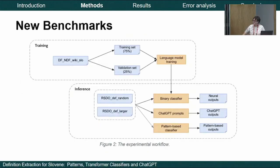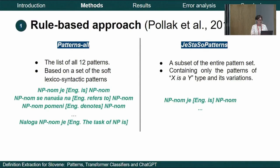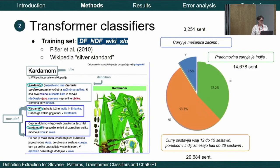We compared two pattern-based approaches developed quite a while ago. They are soft-matching patterns containing typical structures like Hearst patterns, combining lexical and syntactic information. The larger list includes different types of definitions such as functional definitions. The other pattern set is more focused on the 'X is a Y' type structure. For the transformer classifiers, we used a dataset constructed earlier based on a Wikipedia hypothesis.